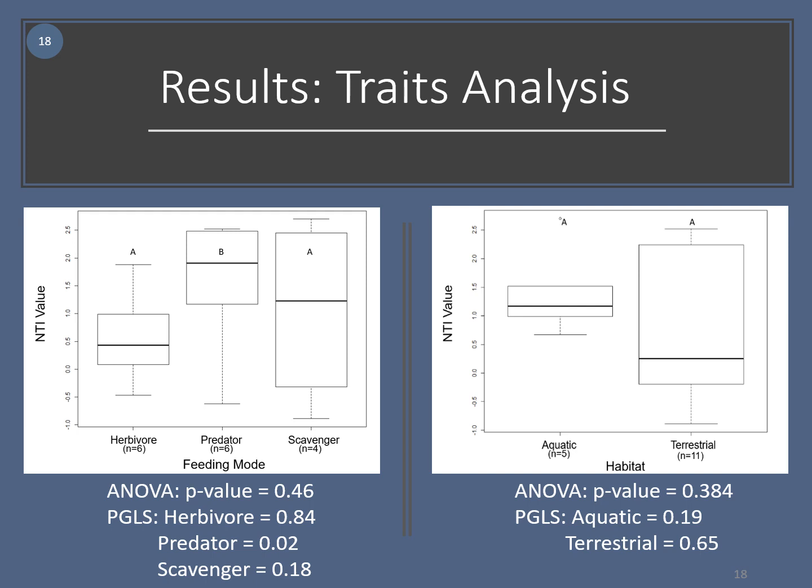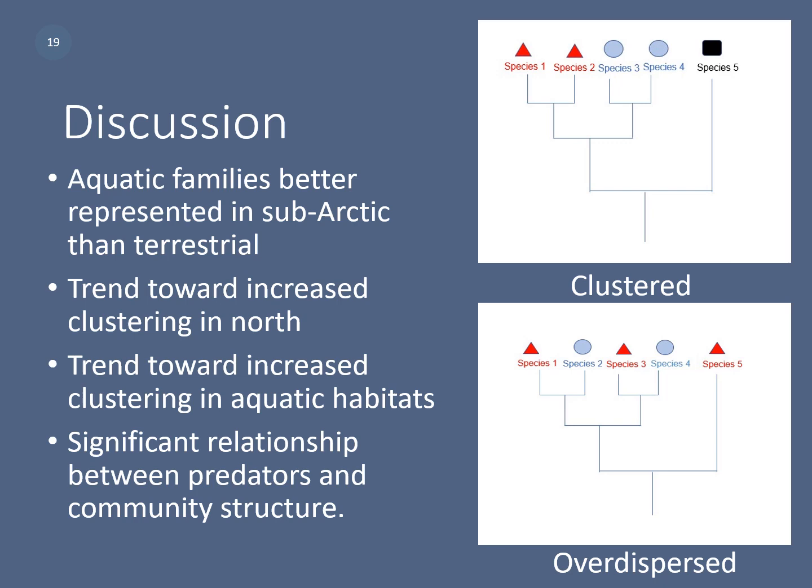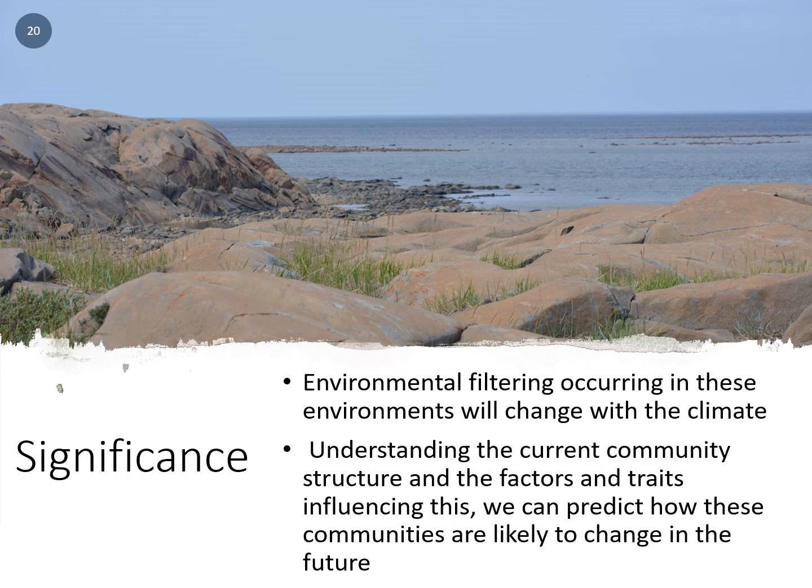To summarize the main findings: aquatic families were better represented in the subarctic than terrestrial families; there was a trend toward increased clustering in the north; a trend toward increased clustering in aquatic habitats; and a significant relationship between predators and phylogenetic community structure. The environmental filtering occurring in these environments will likely change with the changing climate. By understanding the current community structure and the factors and traits influencing it, we can predict how these communities are likely to change in the future. The results suggest that colonization of the subarctic was not random — closely related species sharing similar traits were found in subarctic communities due to environmental filtering, and we can expect communities to become less phylogenetically clustered as species move northward.